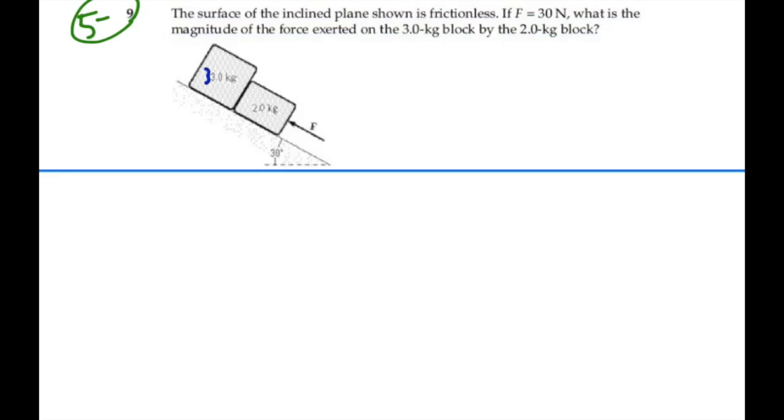So we have a 3 kilogram block over here, a 2 kilogram block here. Let's call those mass 1 and mass 2, respectively. We have a force down here that's equal to 30 newtons. Now, what we want to do initially is to find the acceleration of the whole system, which would be the acceleration of the individual components.